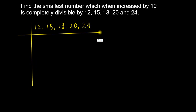We start with 2 and 2. The prime number here is 2. Since we are not done with 2, we include 2 again. We also include 2 — this is a prime number.